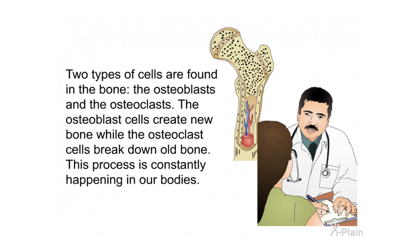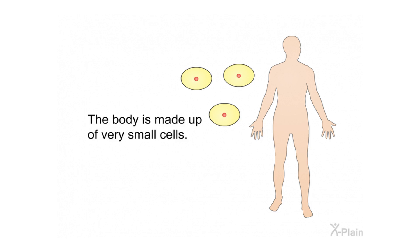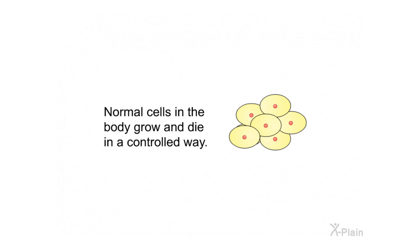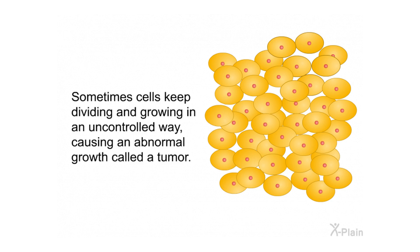Two types of cells are found in the bone: osteoblasts and osteoclasts. Osteoblast cells create new bone, while osteoclast cells break down old bone — this process is constantly happening in our bodies. Normal cells in the body grow and die in a controlled way, but sometimes cells keep dividing and growing in an uncontrolled way, causing an abnormal growth called a tumor.